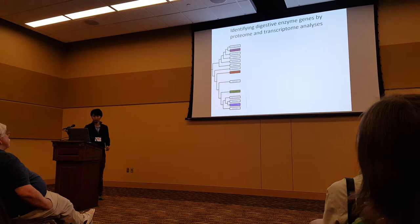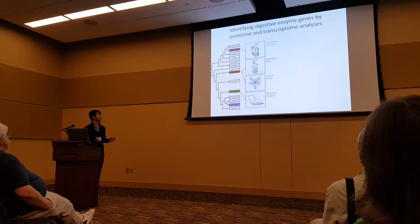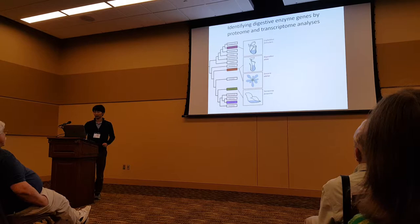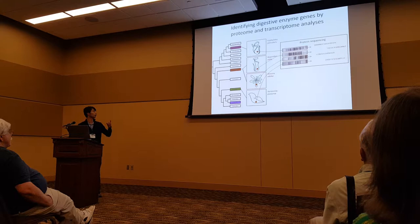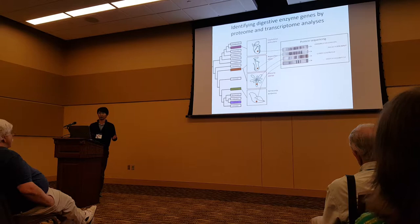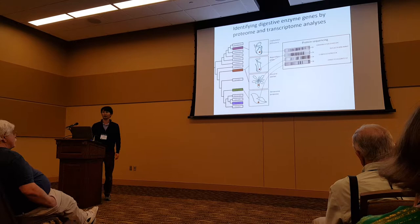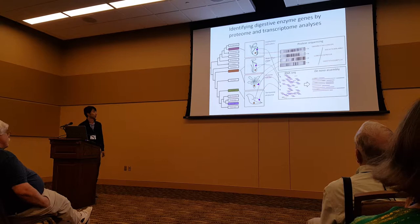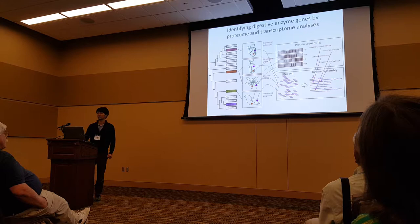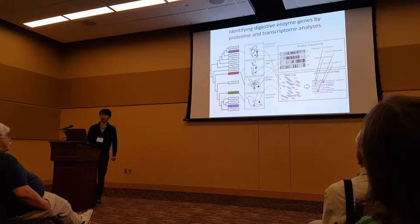What we actually did is sample four species of carnivorous plants that represent three independent origins of carnivorous plant evolution. We collected digestive fluids, and proteins were separated. Each of the proteins corresponds to digestive fluid proteins, so we collected them and sequenced the partial amino acid sequences by the Edman degradation method. In addition, we sequenced the transcriptomes of traps, and after de novo assembly, we identified the complete coding sequences that encode digestive enzymes.